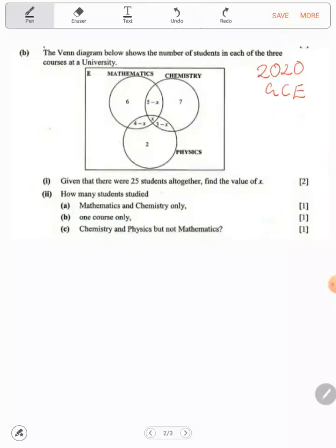So all the numbers we add should give us 25. We are saying 6 plus 5 minus x plus 7 plus 4 minus x plus x plus 3 minus x plus 2. This should give us 25.